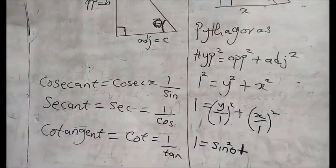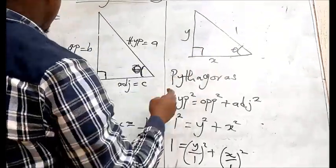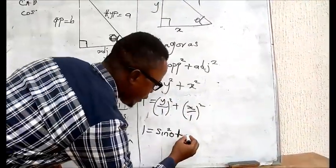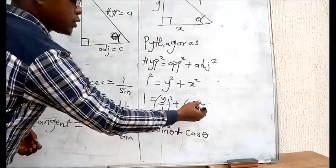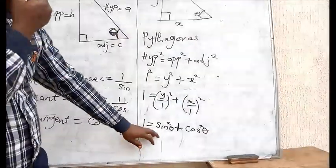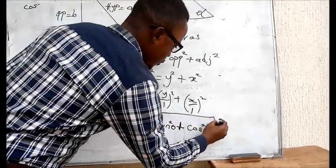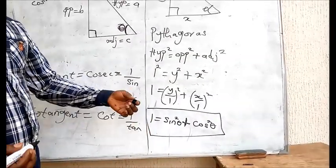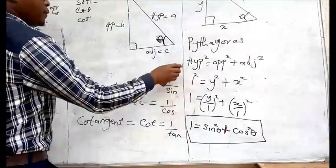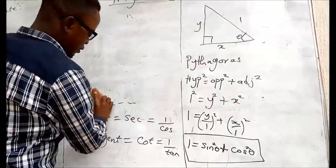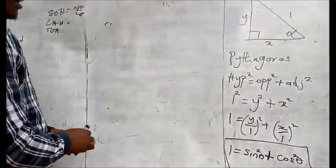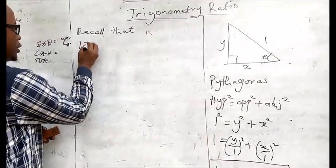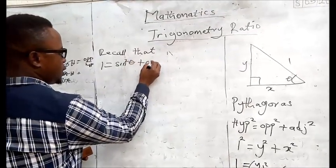So this is the first formula given to us in trigonometry, where we say that sine squared theta plus cosine squared theta will give us one. We can still look at other formulas from this one also. Let's recall that one is equal to sine squared theta plus cosine squared theta. This is the first formula.